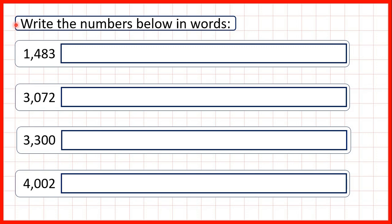We need to write the numbers below in words. All of the numbers here have four digits, and the first digit in a four-digit number tells us how many thousands we have. For this first number, we have one as our thousands digit, so we can write 1,000.